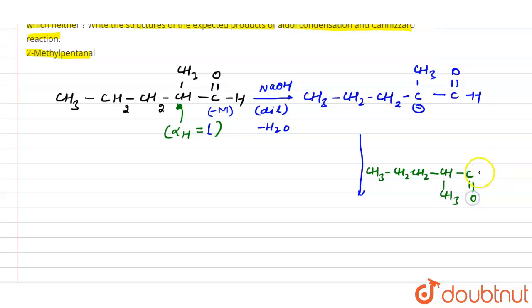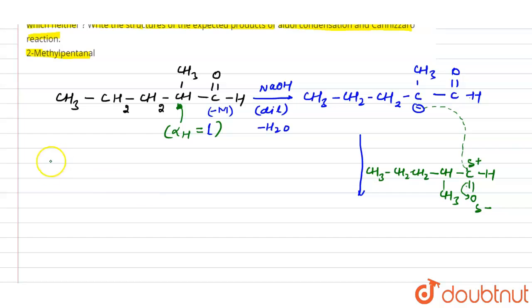The second mole of 2-methyl pentanal is: CH3–CH2–CH2–CH(CH3)–CHO. Due to electronegativity difference, the carbonyl carbon has a partial positive charge. The nucleophilic carbanion attacks this carbonyl carbon, and the pi bond shifts upward.